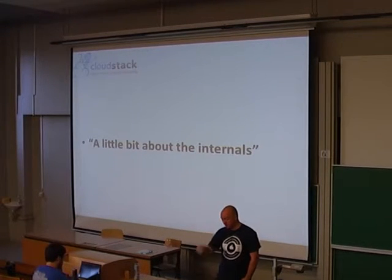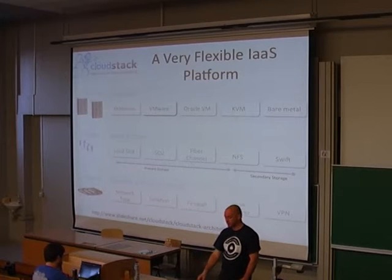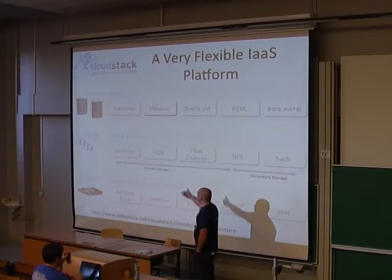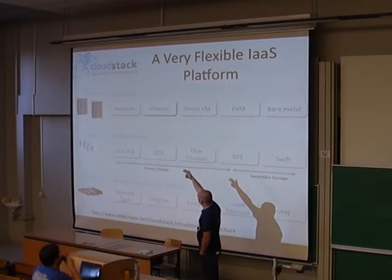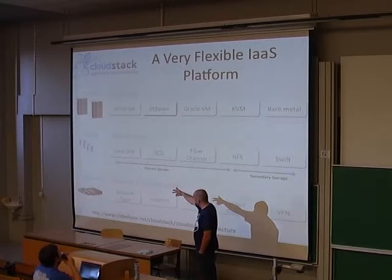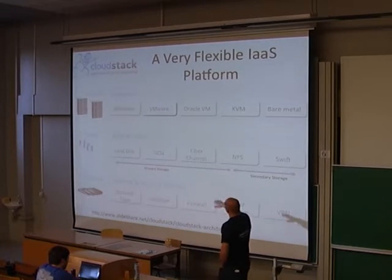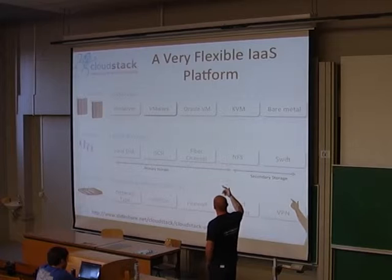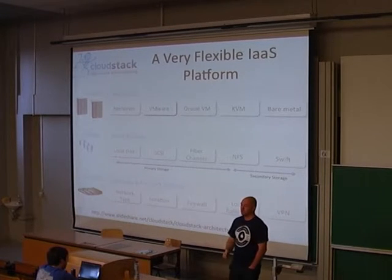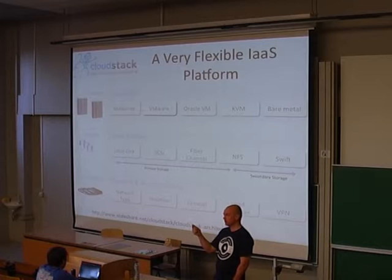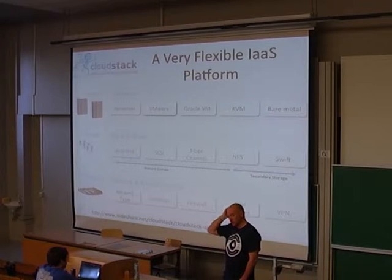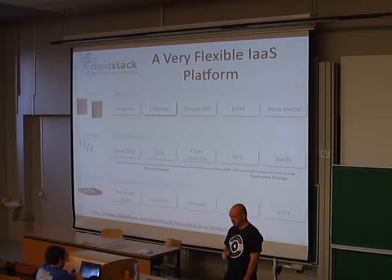Let's talk about the internals. In IaaS you have those three parts: compute, storage, network — which if you know OpenStack would be Nova, Cinder, and Quantum roughly. On the compute side we have hypervisor agnostic support: XenServer, VMware, Oracle VM, KVM, and BareMetal. BareMetal was in an earlier version of CloudStack and just got merged for the 4.1 release — it's basically PXE boot and Kickstart going through the CloudStack API.